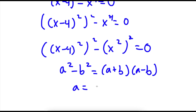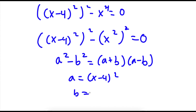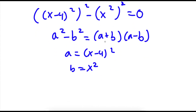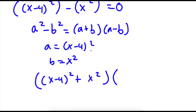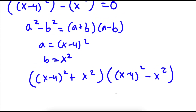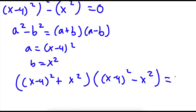Here, a would equal x minus 4 squared, and b is equal to x squared. So now I have a plus b — so x minus 4 squared plus x squared — times a minus b — so x minus 4 squared minus x squared. This is equal to 0.